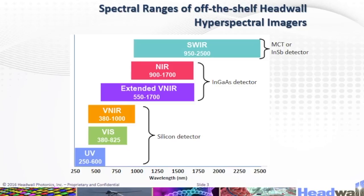At Headwall, spectral range is covered by off-the-shelf hyperspectral imagers. We have the SWIR, near, extended, VNIR, and the VNIR.